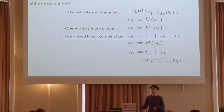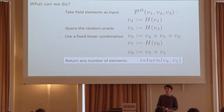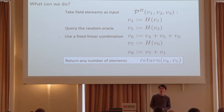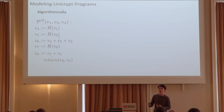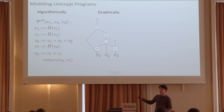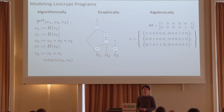Finally, we can return any intermediate values throughout the execution — including inputs, outputs from the random oracle, and linear combinations thereof. Lineecrypt lends itself to multiple models of reasoning: the algorithmic view, which is a sequence of operations; the graphical view in DAG form, where the lack of cycles comes from calls to random oracles; and the algebraic view, which is the most important for our paper.